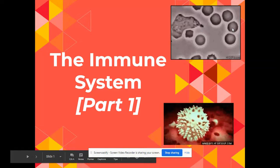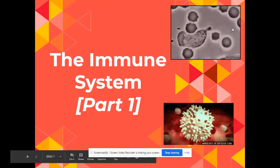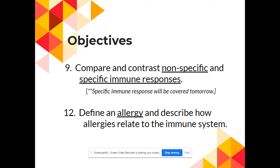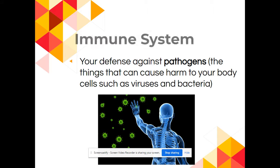Hi everyone, today you're going to be learning a little bit about the human immune system. As you get going today, we're going to be looking at objectives number nine and twelve, looking at non-specific immune responses. We'll look at specific immune responses tomorrow, and you're going to look at allergies and how your allergies can relate to the human immune system.